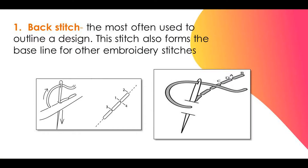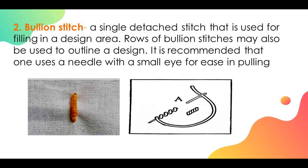Backstitch. Backstitch is the most often used to outline a design. This stitch also forms the baseline for other embroidery stitches. Bullion stitch. Bullion stitch is a single detached stitch that is used for filling in a design area.